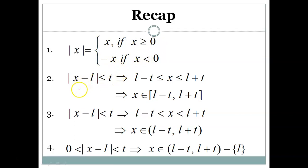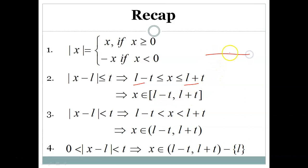Now if we write |x - l| ≤ t, where l and t are any numbers, it means x lies between l minus t and l plus t. In other words, x belongs to the closed interval [l-t, l+t]. Adding t to l and subtracting t from l gives us the closed interval, including the endpoints.